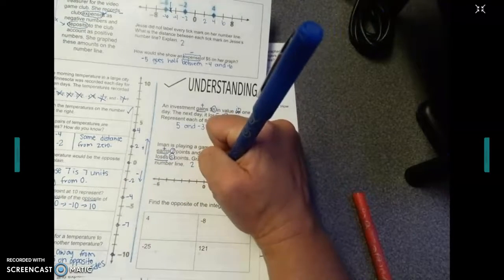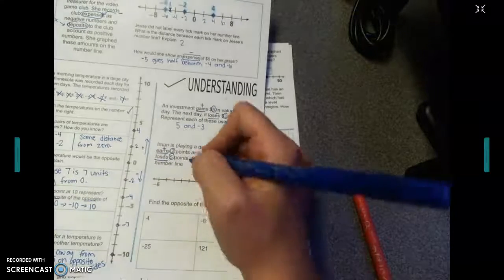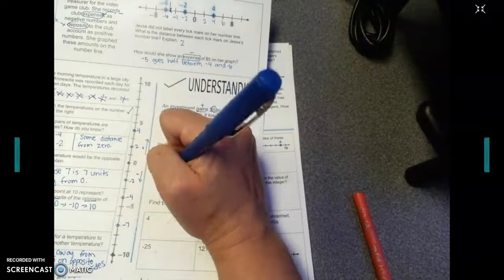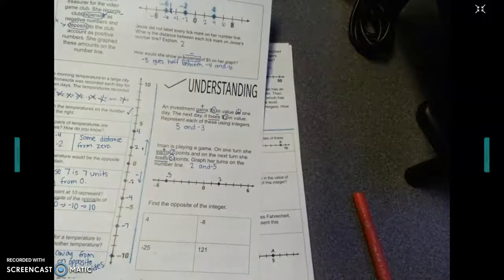So let's put our 2 on there. We're going to put our dot right here at 2. And I'm going to go ahead and label it. And then we're going to go to negative 5, which is over here, because negatives are on this side. That's all you had to do on that one.